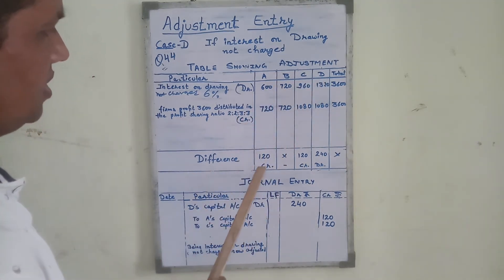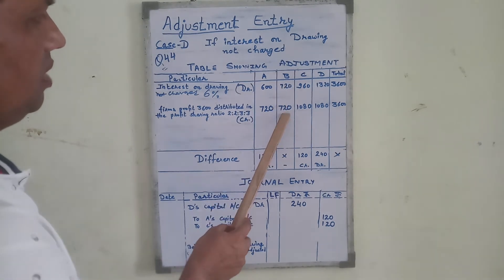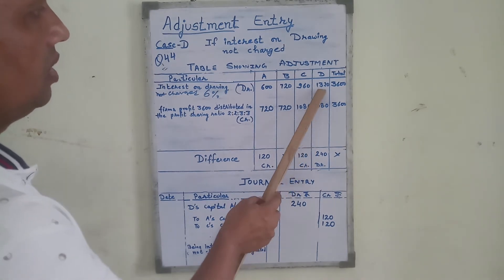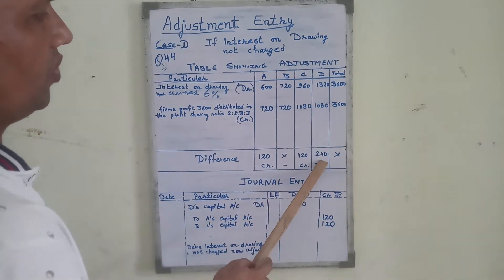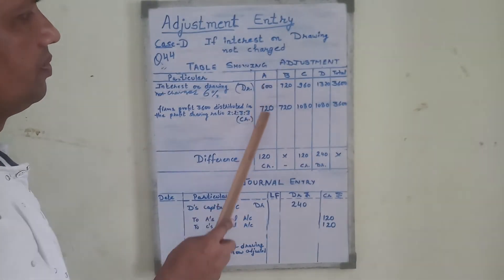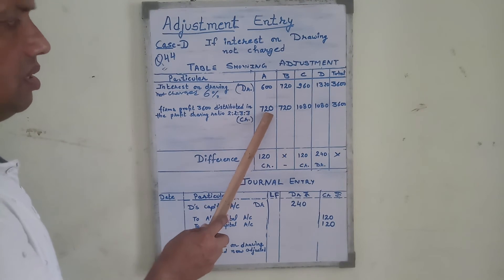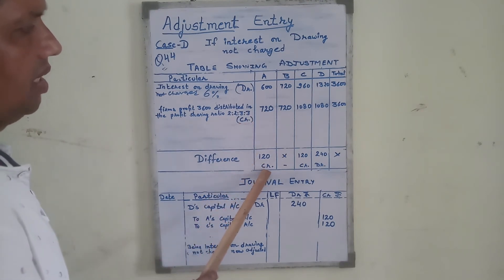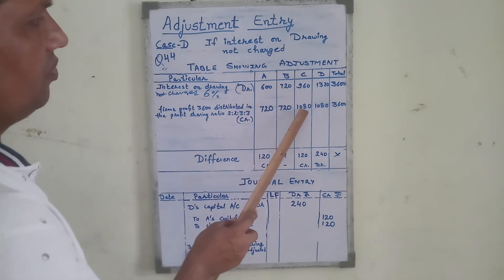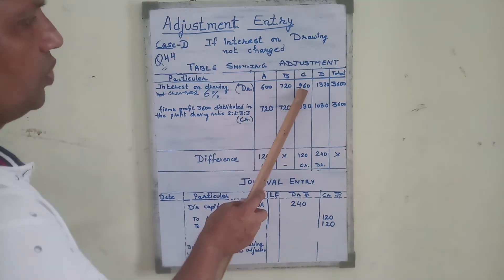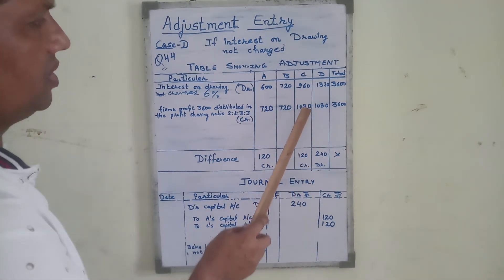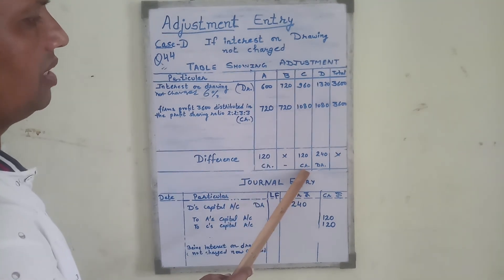After computing the differences: for B, 720 minus 720 is nil. For C, 960 minus 1,080 is 120 — since 1,080 is more, the balance of 120 is credited. For D, 1,080 is credited, so that balance is also credited. In each case, whichever amount is more determines whether the balance is debited or credited.